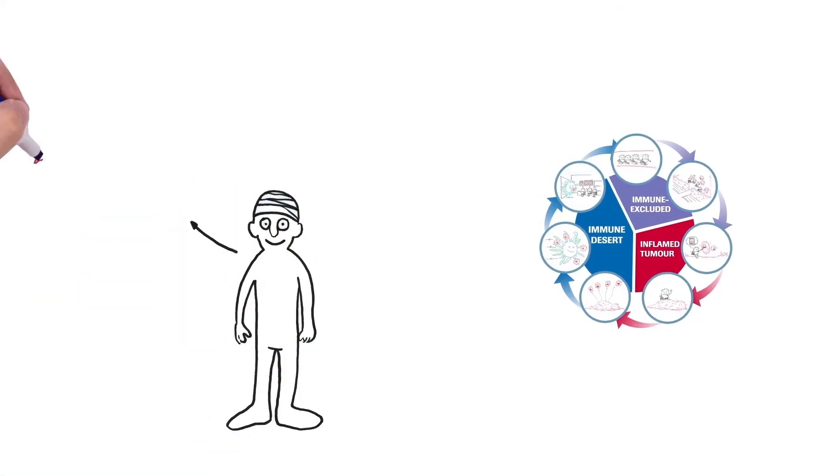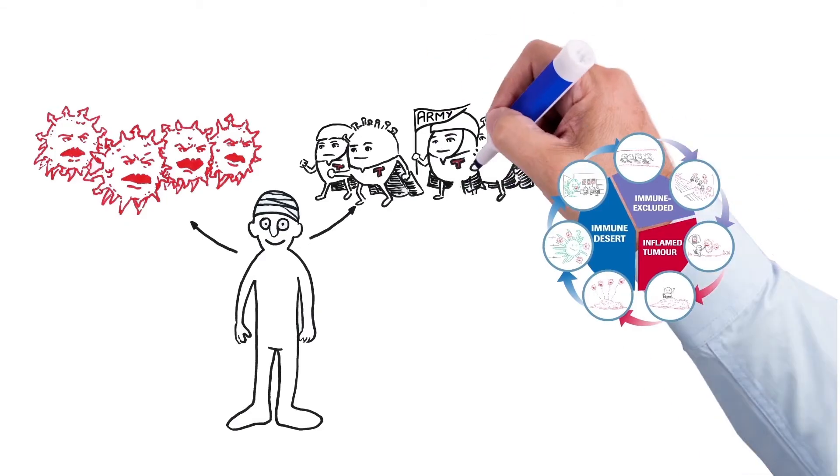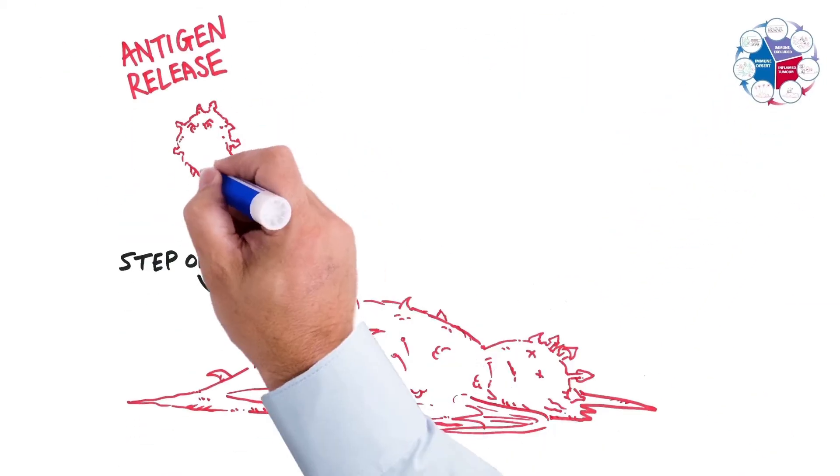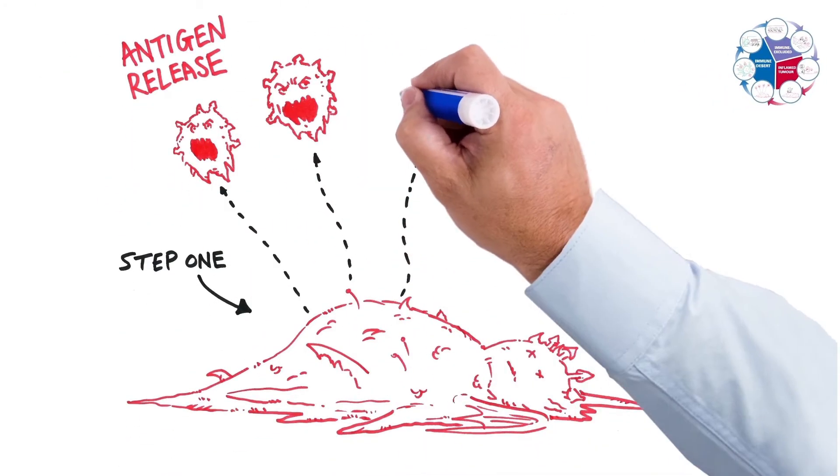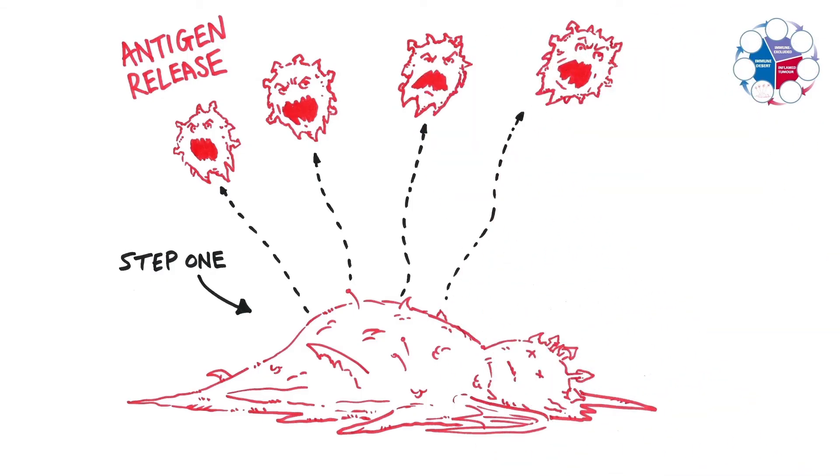The cancer immunity cycle is a framework that helps to describe how a tumor interacts with the human immune system. In step one, this is where cancer cells die and they release antigens, protein bits of themselves.